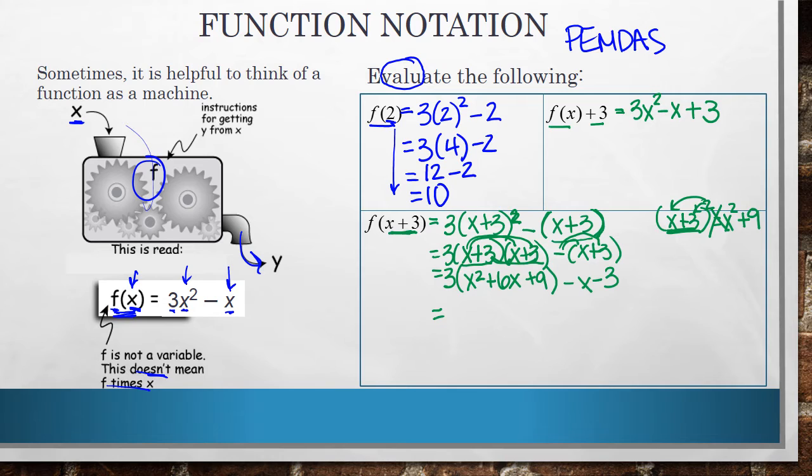Now I'll distribute this 3 to each of these places. So 3 times x squared is 3x squared. 3 times 6x is positive 18x. And 3 times 9 is positive 27. And then I still have this minus x minus 3. And now I'll combine like terms. And I get 3x squared plus 17x plus 24.